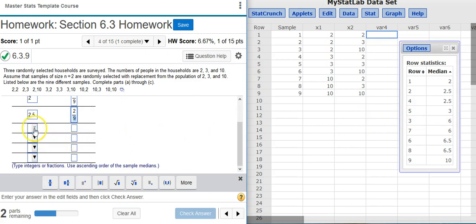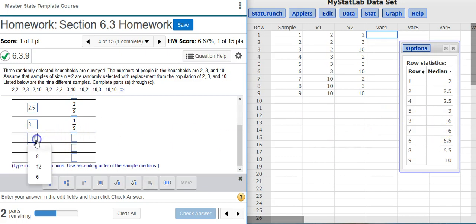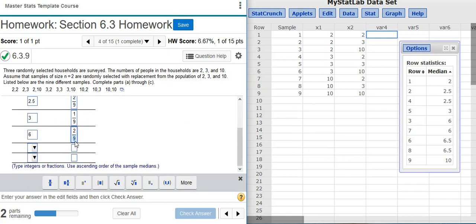The next value is 3, and there's only one of those, so its probability is 1 over 9. The next value is 6, and there's 2 of those, so its probability is 2 divided by 9.